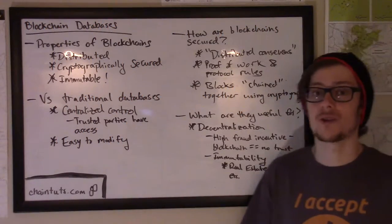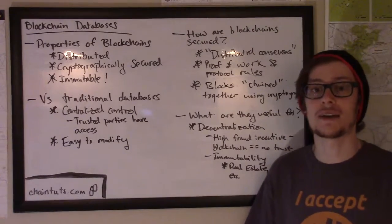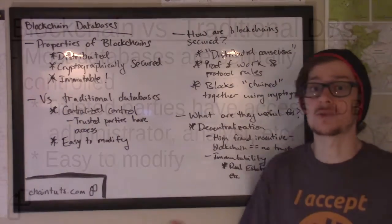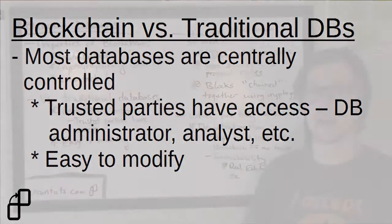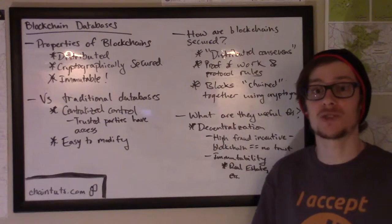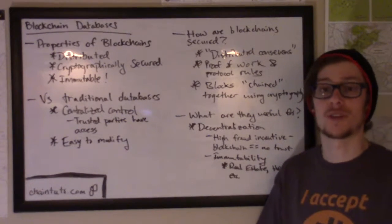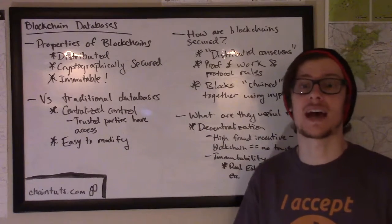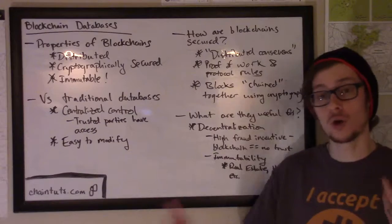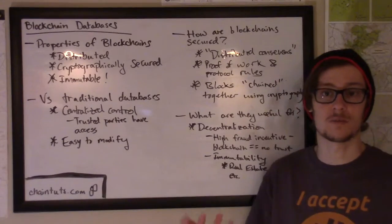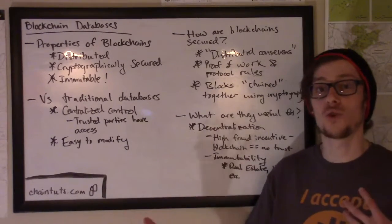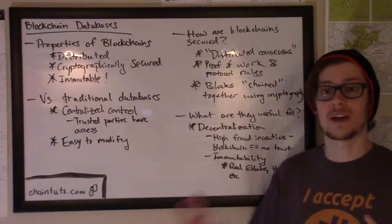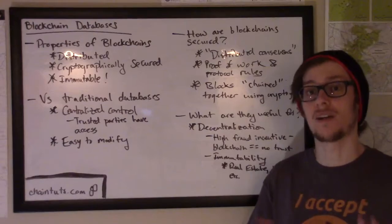So how does this compare to traditional databases? With a traditional database like a MySQL database or a Cosmos DB database, control is generally centralized. There's one party or one organization that has trust and control over the database — for example, an IT administrator you trust to back up the data and make sure that everything in it is secure and valid, and maybe a business analyst has read access to that database to look over historical customer transactions and make some business decisions. Contrast that with blockchain where everything is decentralized, controlled by different nodes on the network running a set of protocols to decide what's valid and what's invalid to include in the database.